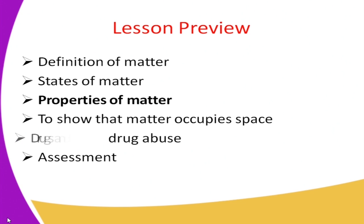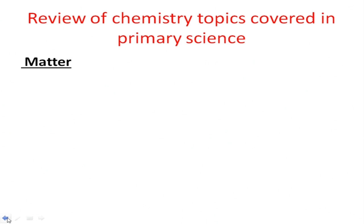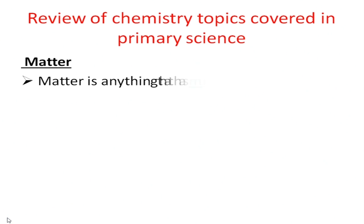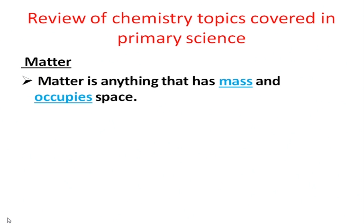Stay with me. Let's begin by making a review of chemistry topics that were covered in primary science. The first topic we are going to look at is matter. In our primary science, we discussed this topic. So, what is matter? The definition of matter is anything that has mass and occupies space.